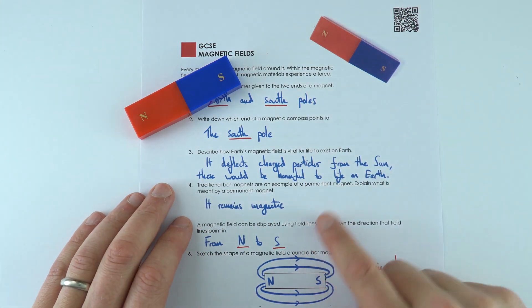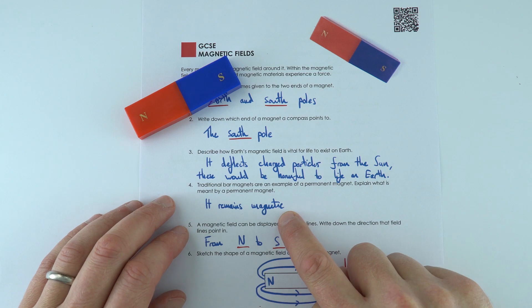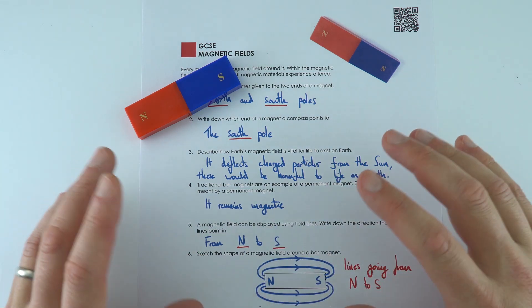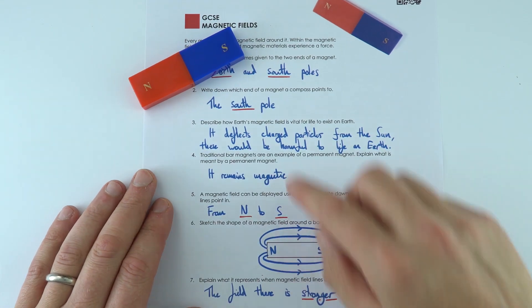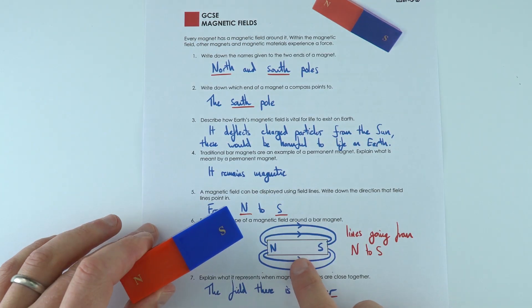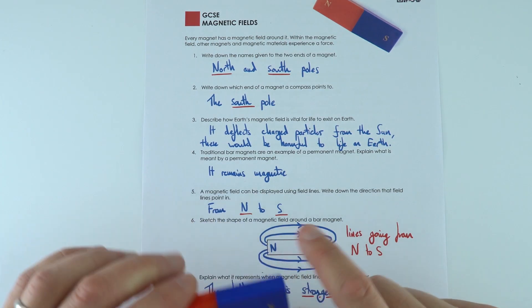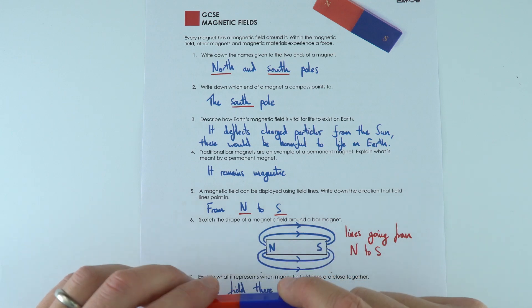So we've got permanent magnets, they stay magnetic as opposed to electromagnets, which we can turn on and off. And what we can do is we can show this field by drawing field lines to show what's actually happening around the magnet.